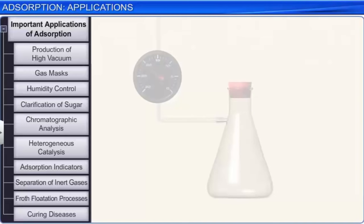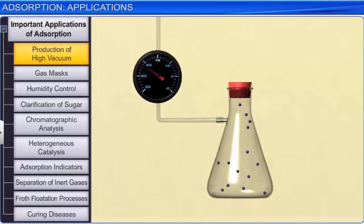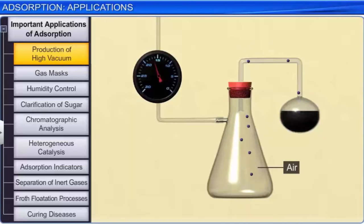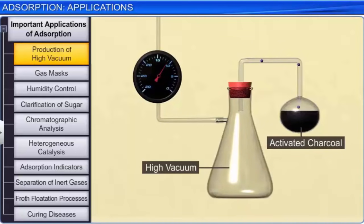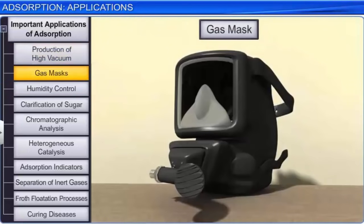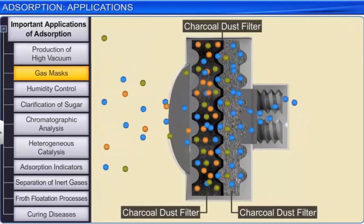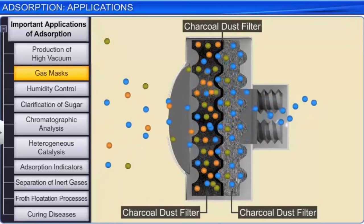For production of high vacuum: a vessel that has already been evacuated by a vacuum pump may still contain traces of air. If a bulb of activated charcoal is connected to this vessel, the remaining traces of air get adsorbed by the activated charcoal, resulting in the production of a very high vacuum.